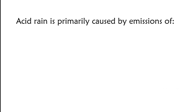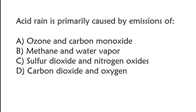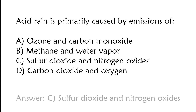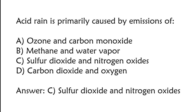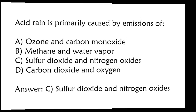Acid rain is primarily caused by emissions of: A) ozone and carbon monoxide, B) methane and water vapor, C) sulfur dioxide and nitrogen oxides, D) carbon dioxide and oxygen. The correct answer is option C, sulfur dioxide and nitrogen oxides.